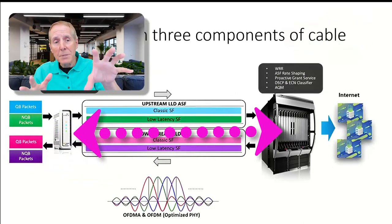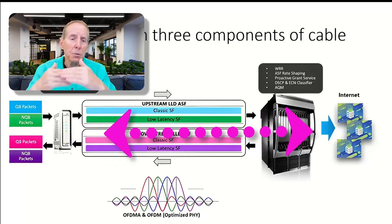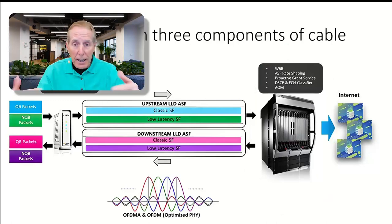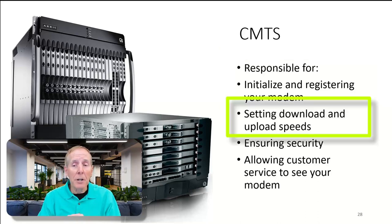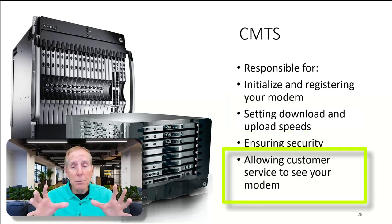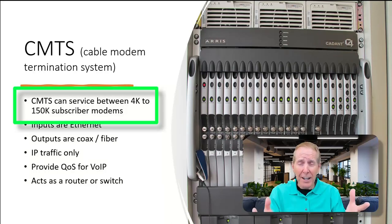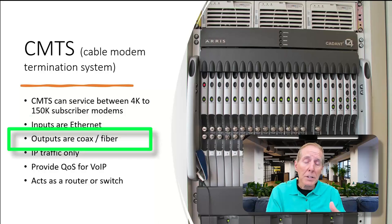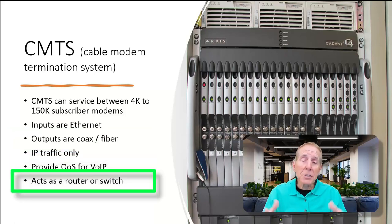Understand, in your data delivery, CMTS and your cable modem are tied together. In fact, your cable modem talks to CMTS every 30 seconds with a handshake. The CMTS is actually controlling your cable modem for optimum data delivery dynamically. CMTS does a ton of stuff - it's responsible for initializing and registering your modem, sets the download and upload speeds with a binary file, ensures security if enabled, and allows customer service to see everything about your modem. A CMTS can service between 4,000 and 150,000 subscriber modems.